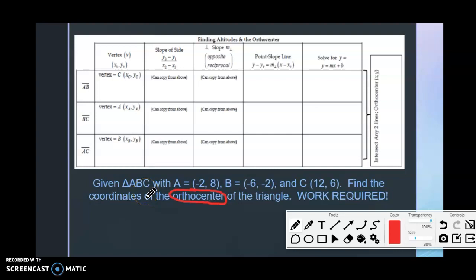All right, so first of all you need to know what the orthocenter of the triangle is. Remember the orthocenter of the triangle is the intersection of the altitudes, and remember the altitude starts from the vertex and is perpendicular to the opposite side. It does not cut the opposite side in half, it is just perpendicular to it.